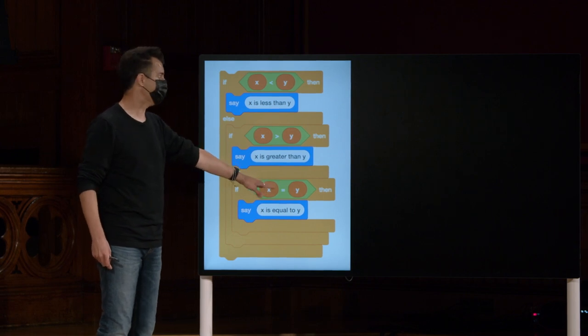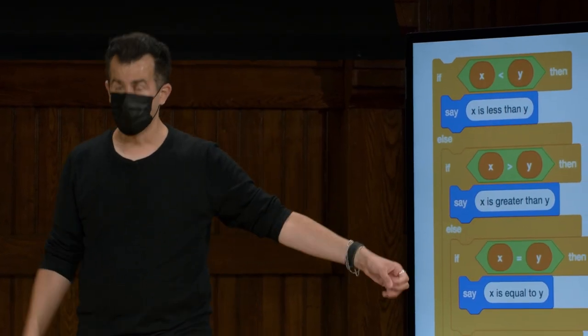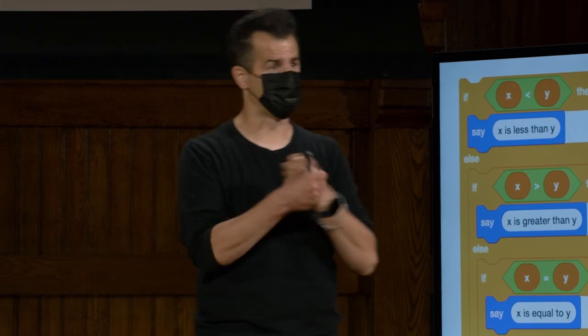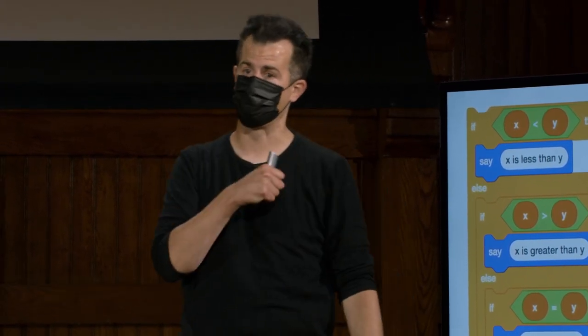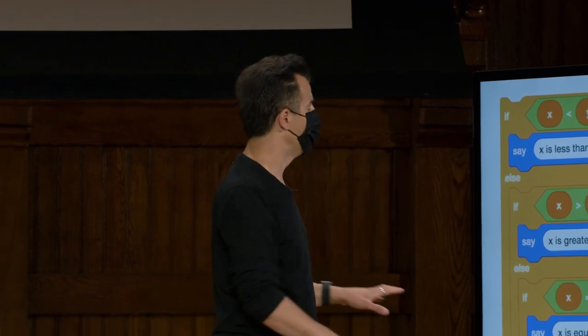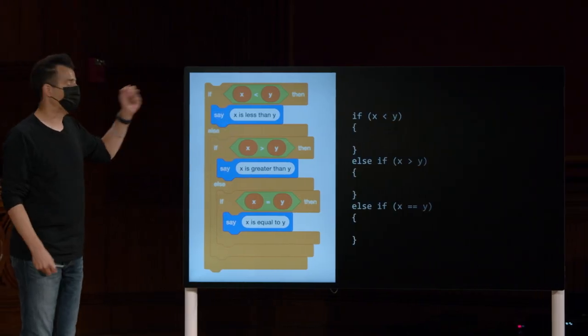Que tal isso da semana passada? Aqui estava uma bifurcação de três vias na estrada. Se x é menor que y, se não... Se não, se x é maior que y, se não, se x é igual a y. Agora, aqui é onde você tem algumas disparidades entre Scratch e C. Scratch usa um sinal de igual para igualdade, para comparar dois valores. C usa um único sinal de igual para atribuição da direita para a esquerda.